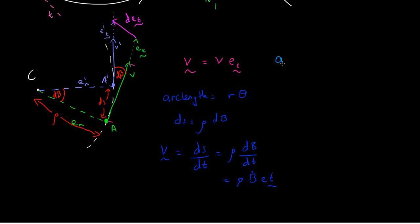So A vector is the derivative of the velocity vector with respect to time, which is, if we use the product rule here, we get v dot times e in the tangential direction, plus v times e in the tangential direction dot. So how can we find this?